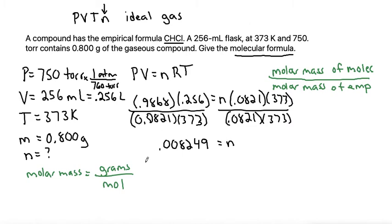So my n is 0.9868 times 0.256 divided by 0.0821 divided by 373. That gives me 0.008249 is my number of moles. Plugging that number into my molar mass formula along with the mass gives me 0.800 for the mass on top, and the moles is 0.008249. Grabbing my calculator again, 0.8 divided by 0.008249 is 96.98, which would be the molar mass.